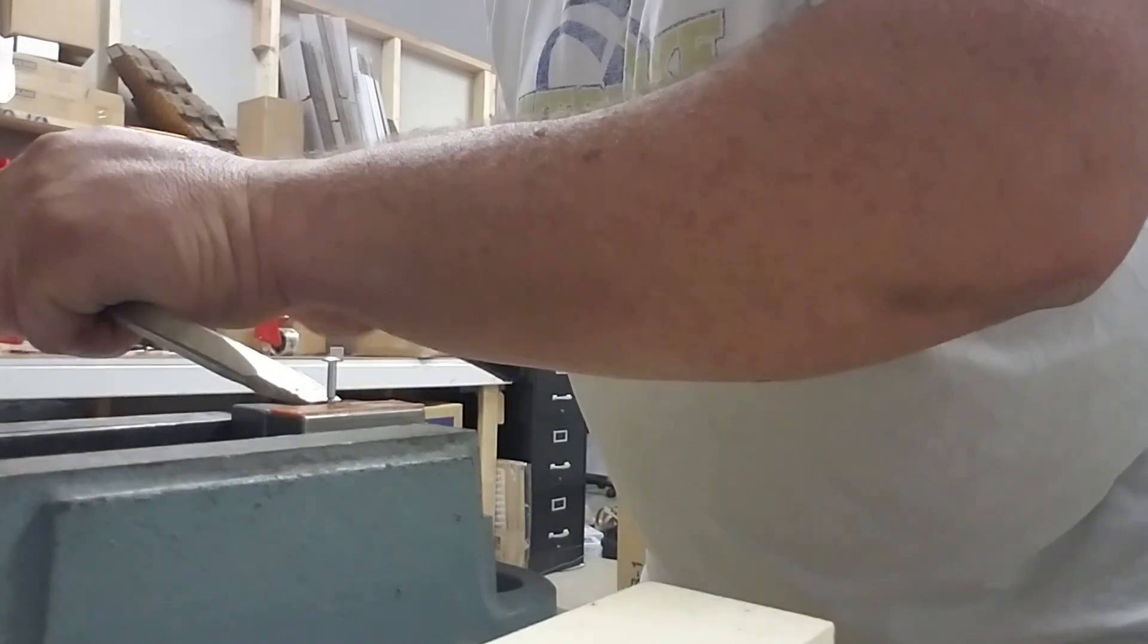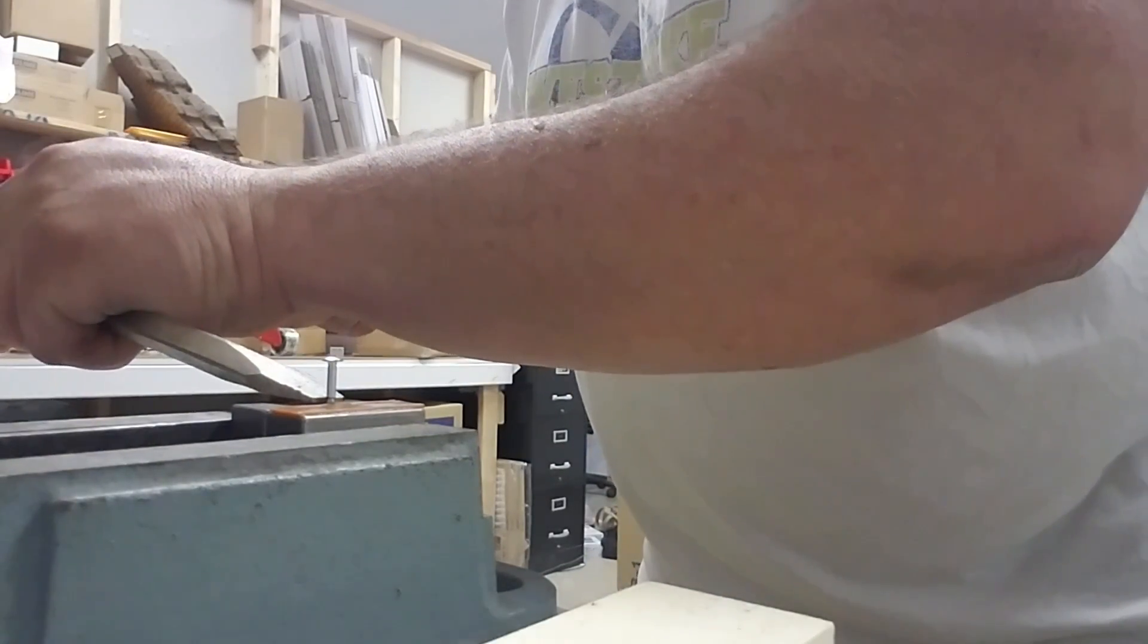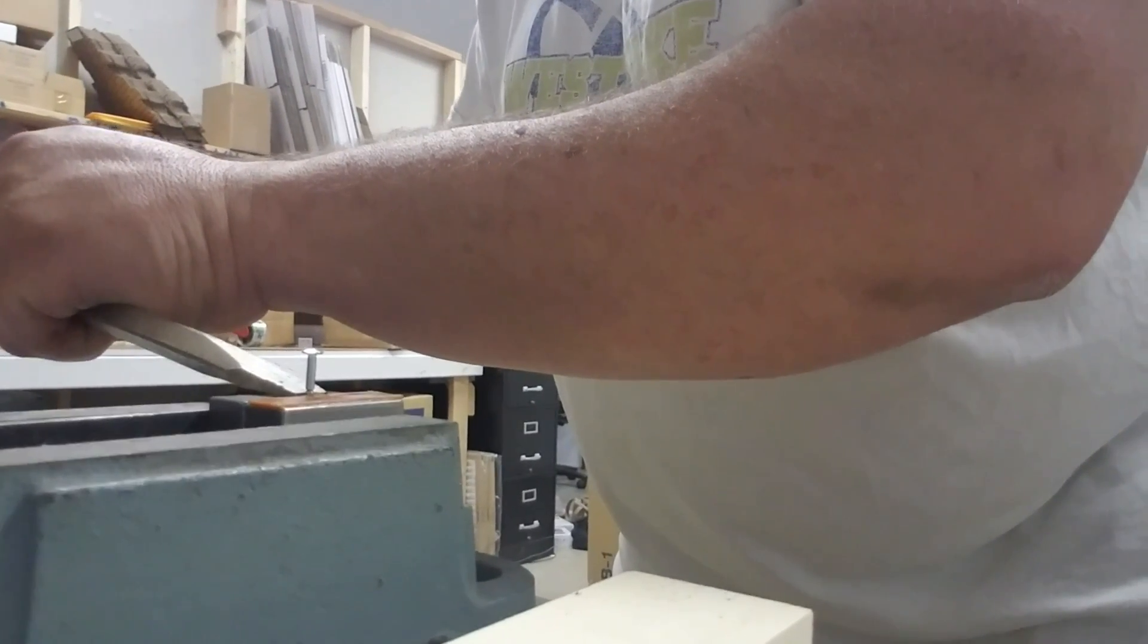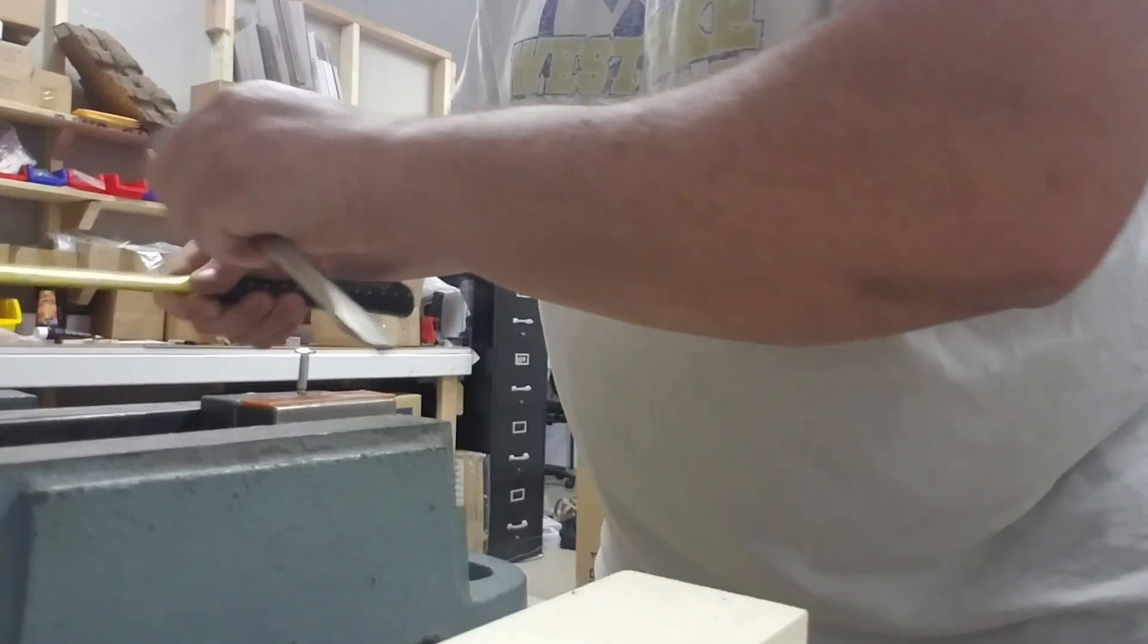Put the flat blade part of it in your bending groove and gently tap it over until you get the bend you want.